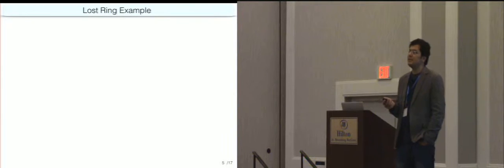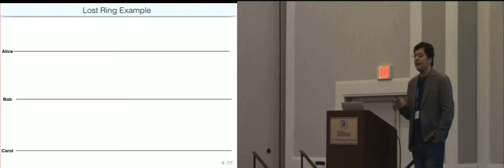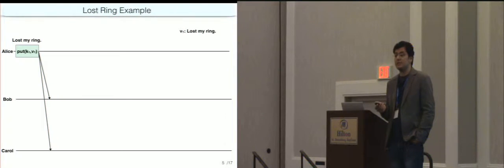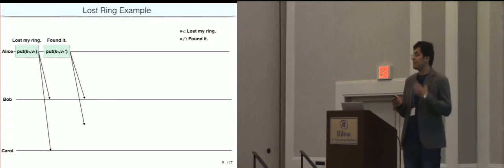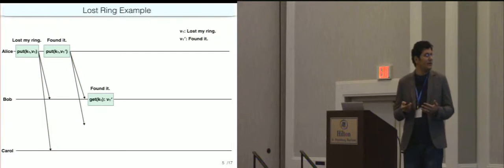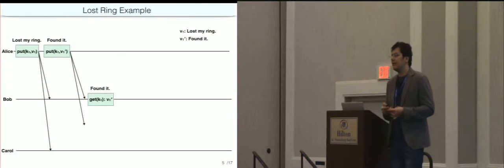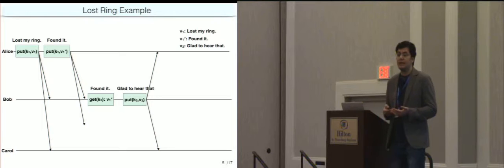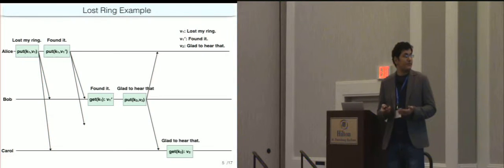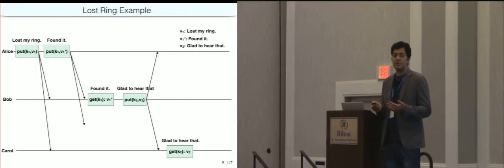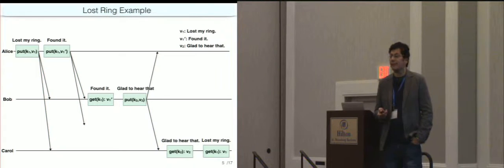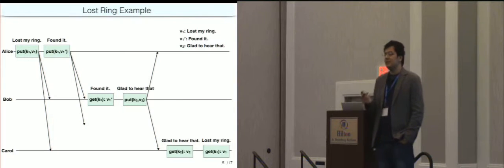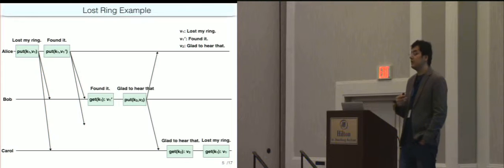Let me introduce causal consistency with an example. Alice loses her ring and goes online and changes her status to 'lost my ring.' Messages are sent to the other replicas. Then she finds her ring and posts again, 'found my ring,' and messages are sent to Bob and Carol. Bob views the status, sees 'found it,' and posts 'glad to hear that.' Now Carol has received the first message from Alice and the message from Bob. She reads Bob's message 'glad to hear that' and views Alice's status, which still shows 'lost my ring.' So Carol concludes that Bob is happy because Alice has lost her ring.